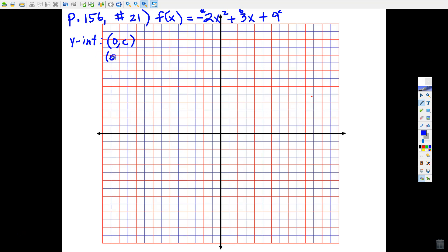Or we could show it as (0,9), either way. So we have a y-intercept of 9. Now the next instruction says to find the AOS, the equation that represents the AOS, and that's going to utilize this formula, the opposite of b over 2a.